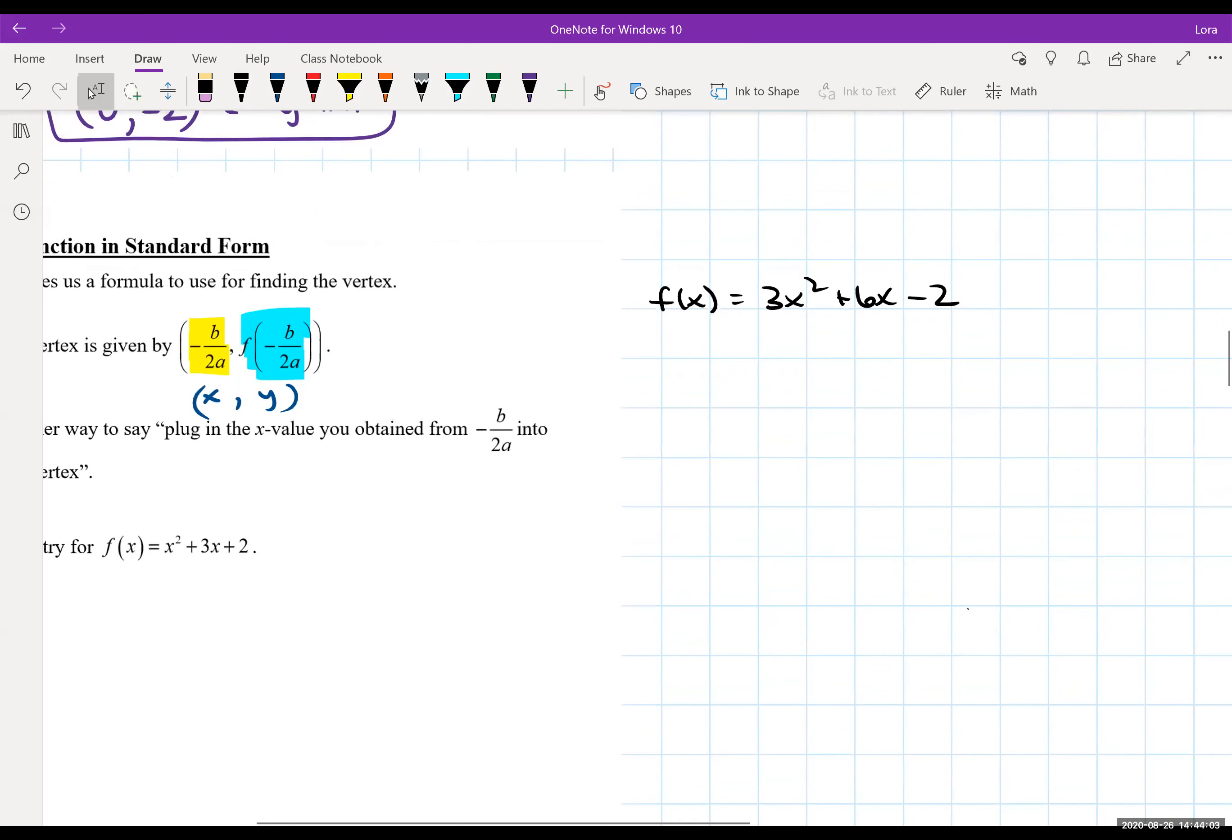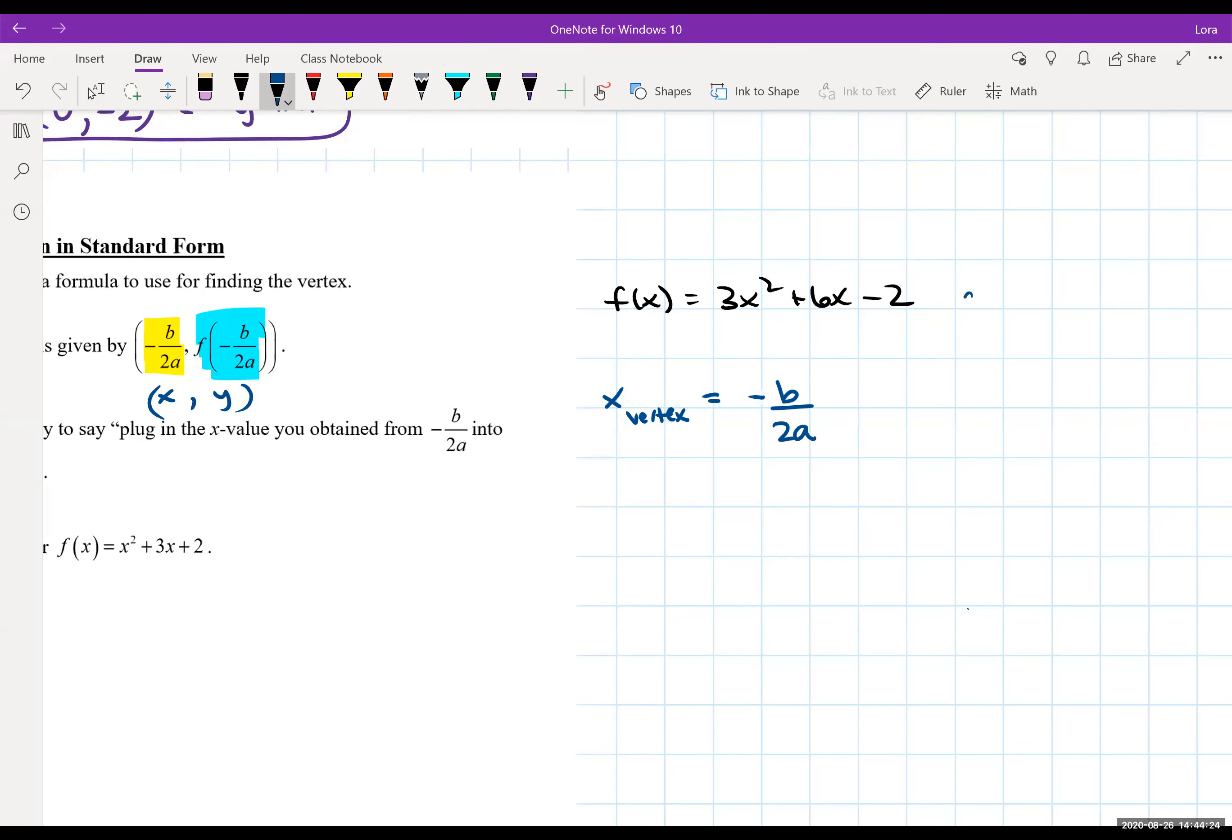Now what this nice formula says is that we can find the x value of the vertex and I will denote it with a subscript by plugging in the formula negative b over 2a. So if we look at our quadratic function in general form if you were to kind of label your parts you would see that a is equal to